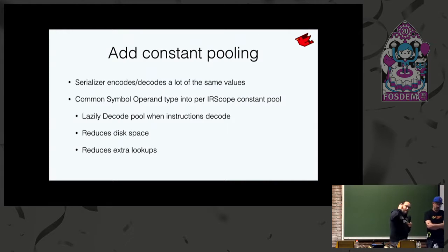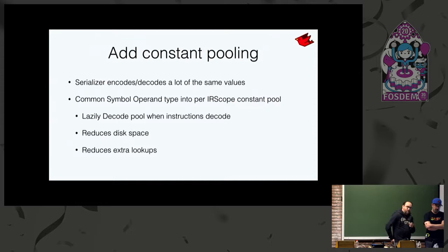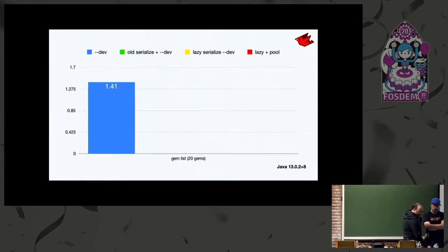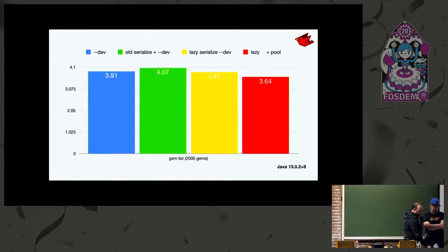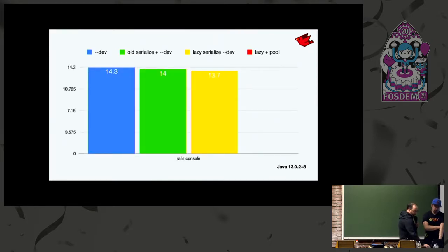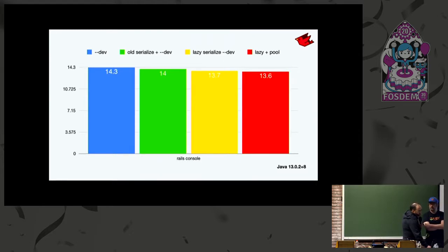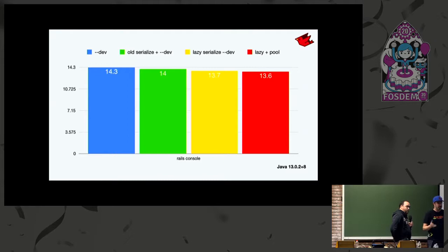When we came to EuRuKo, I noticed there was a constant pool index we weren't using in our format, so I thought: let's add constant pooling. Saving symbols to a pool prevents having to decode a bunch of bytes for the symbol name and its encoding, and avoids looking it up in our global symbol table. We got a little bit faster across all cases. There's still more to do — right now it's a constant pool per scope, but a constant pool for an entire file would make more sense, sharing symbols as much as possible.